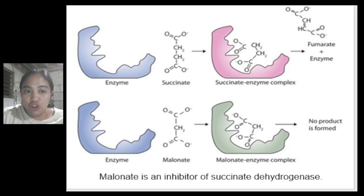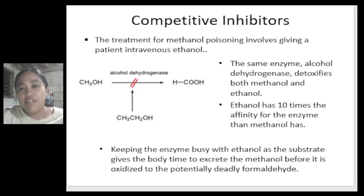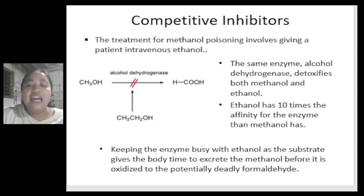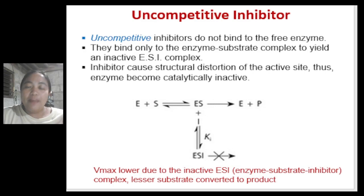An example of competitive inhibition: the enzyme succinate dehydrogenase has succinate as its substrate and produces fumarate. Its competitive inhibitor malonate has the same size and shape as succinate, so when malonate binds to the active site, the enzyme is inhibited and no fumarate is formed. Competitive inhibition can be reduced by simply increasing the concentration of the substrate. Another example is methanol poisoning treatment: giving the patient ethanol IV works because ethanol has 10 times the affinity for alcohol dehydrogenase compared to methanol, keeping the enzyme busy and allowing the body to excrete methanol before it is oxidized to the potentially deadly formaldehyde.